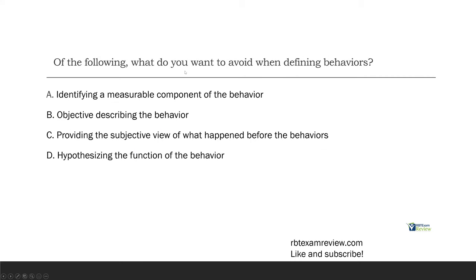And then finally, of the following, what do you want to avoid when defining behaviors? What do we want when we define behaviors? We want to be objective. We want to be observable. We want to be measurable. And we want to avoid giving things like our opinion, our subjective thoughts. So, A, identifying a measurable component of the behavior. Well, you don't want to avoid that. We need to measure the behavior somehow. We need to find something related to the behavior, a component of the behavior that is measurable. B, objectively describing the behavior. You always want to be objective.